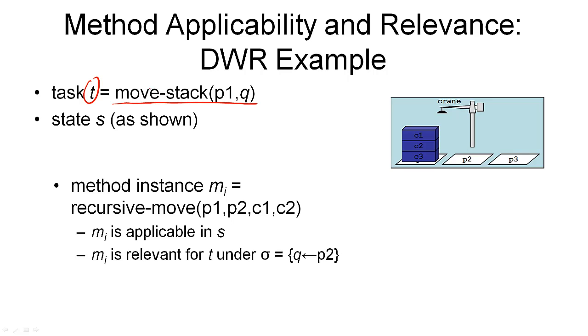Now suppose our task t is to move the stack p1 to q. So we don't have a task that says we need to move it in an ordered way, we just have a task to move it at all. And we want to move it from p1 to some other unspecified stack because q is a variable here. The state s is as shown here. So this is our initial world state in which we have this task to accomplish.